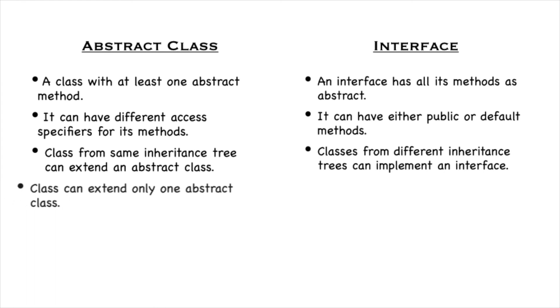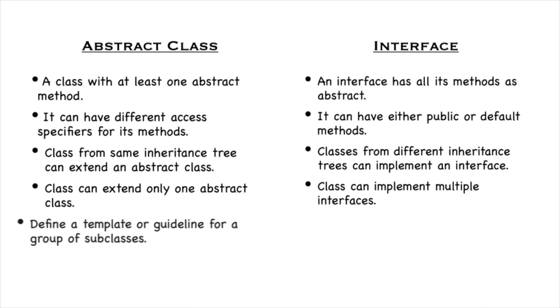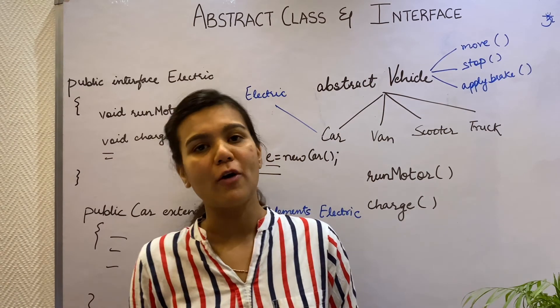A class can only extend one abstract class at a time, but a class can implement multiple interfaces at a time.